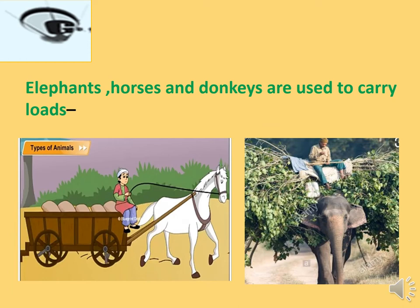Horses and donkeys are used to carry loads. In earlier times, human beings discovered that animals can carry more load on their back and cover more distance while carrying loads. So from early times, human beings started using animals for their help — for example, horses, elephants, camels, bulls, cows and many other animals.